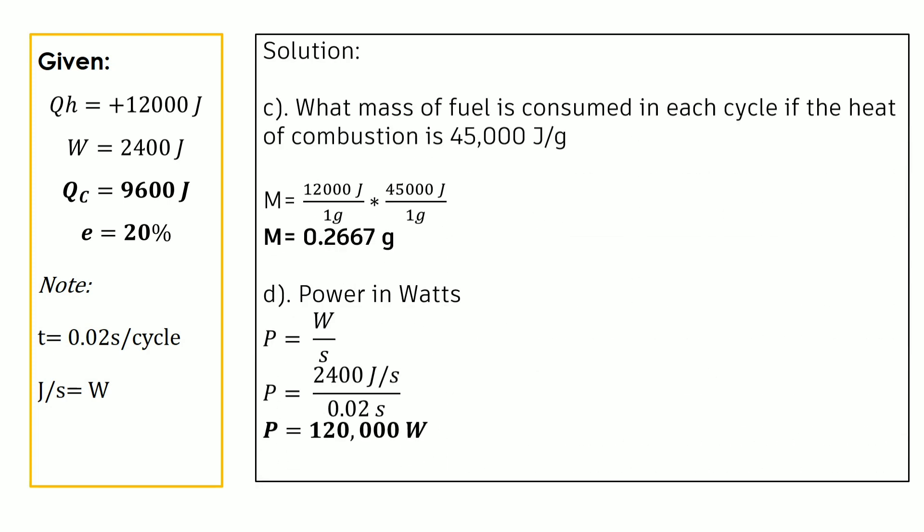For our third question — what mass of fuel is consumed in each cycle if the heat of combustion is 45,000 joules per gram — the mass is equivalent to the heat addition of 12,000 joules divided by 45,000 joules per gram. After calculation, the mass of fuel consumed per cycle is 0.2667 grams.